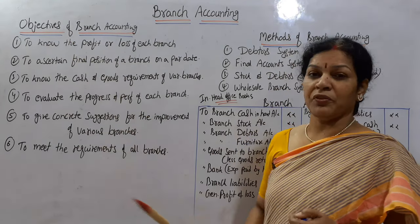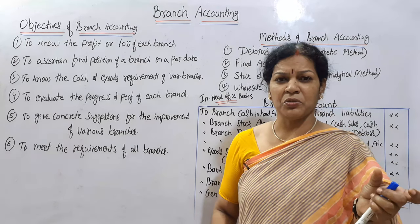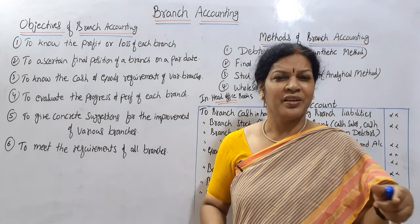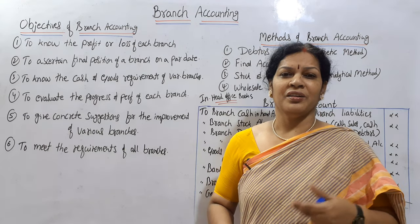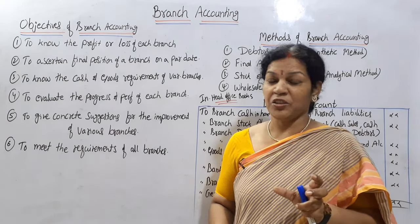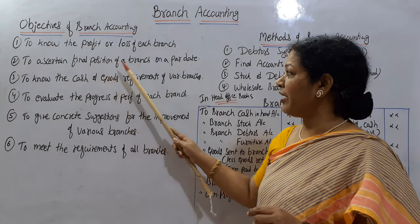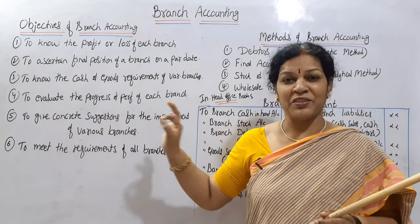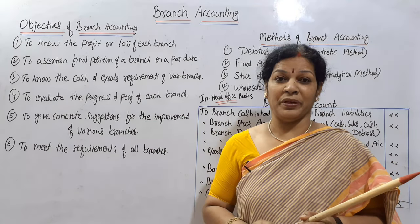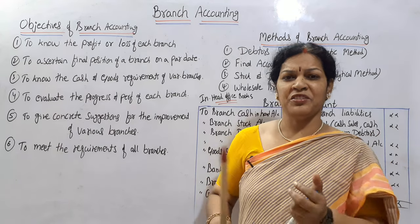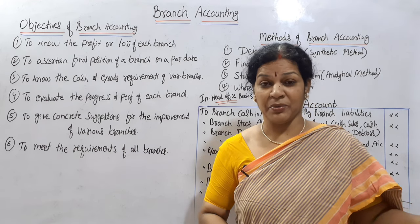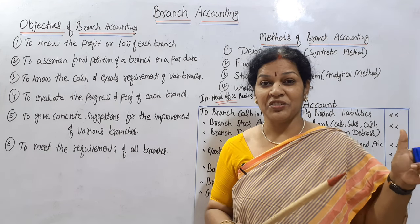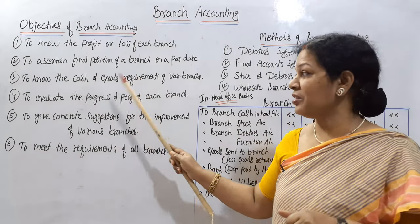Now, what are the objectives of branch accounts? First, to know the profit or loss of each and every branch — whether it's going towards profit or loss. If towards profit, how can we enhance more profits? If towards loss, how can we recoup it into profit? Strategic planning is possible when we know. Second, to know the financial position of a branch on a particular date. We open separate branch accounts — Mumbai branch, Chennai branch, Kolkata branch, Hyderabad branch — each one will show the exact position.